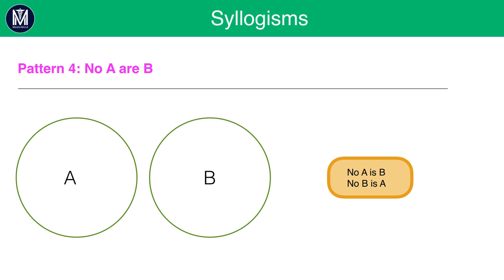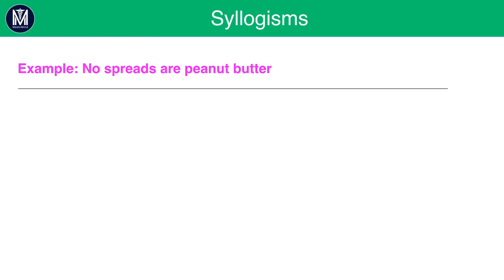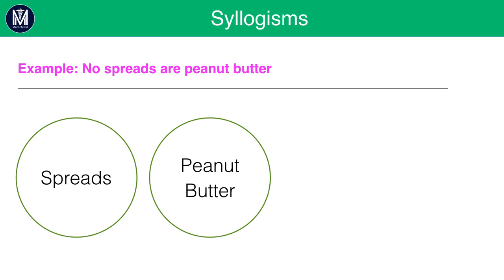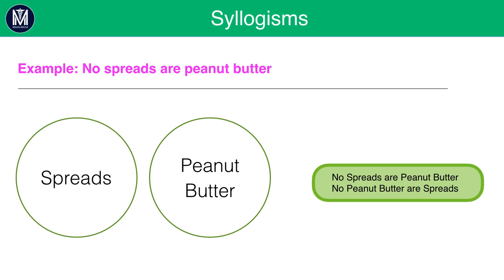Pattern 4: 'No A are B.' This pattern is more straightforward. If no A are B, we can also safely assume that no B are A. For example, with the statement 'no spreads are peanut butter,' we know that no spreads are peanut butter and that no peanut butter are spreads.